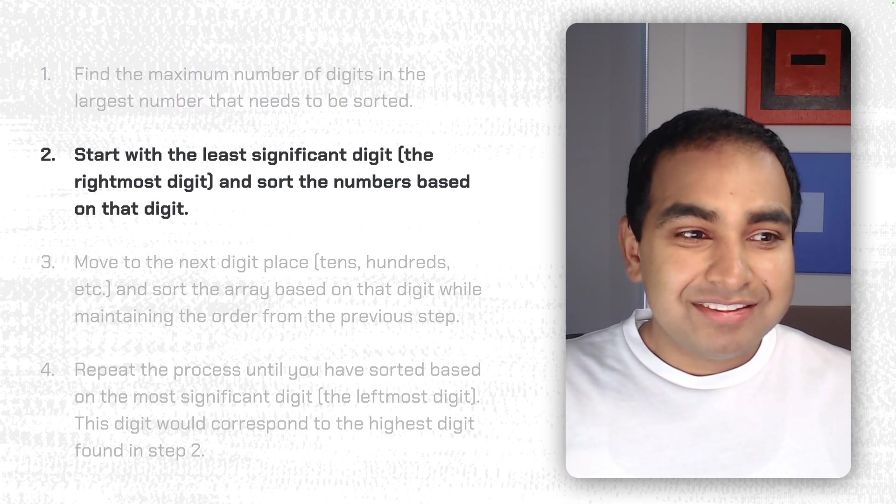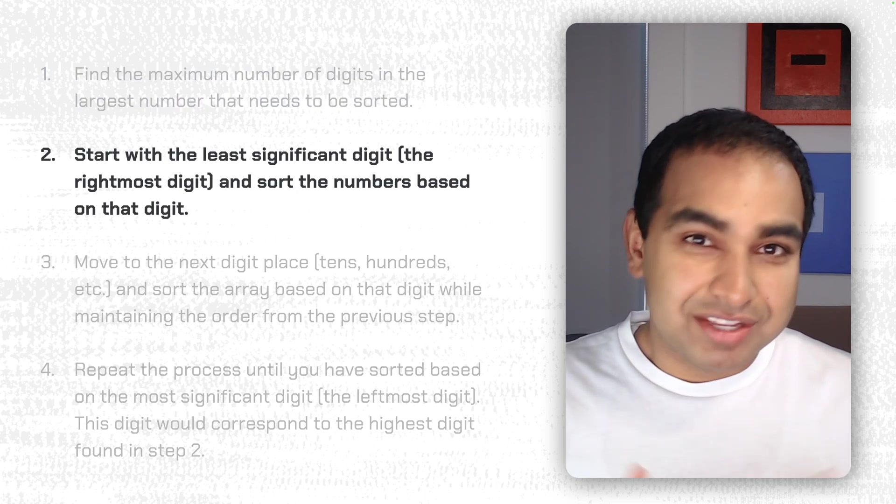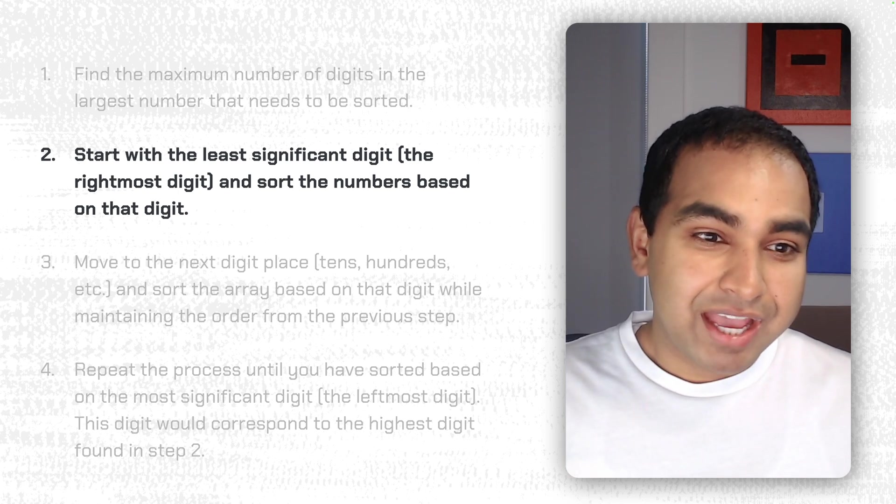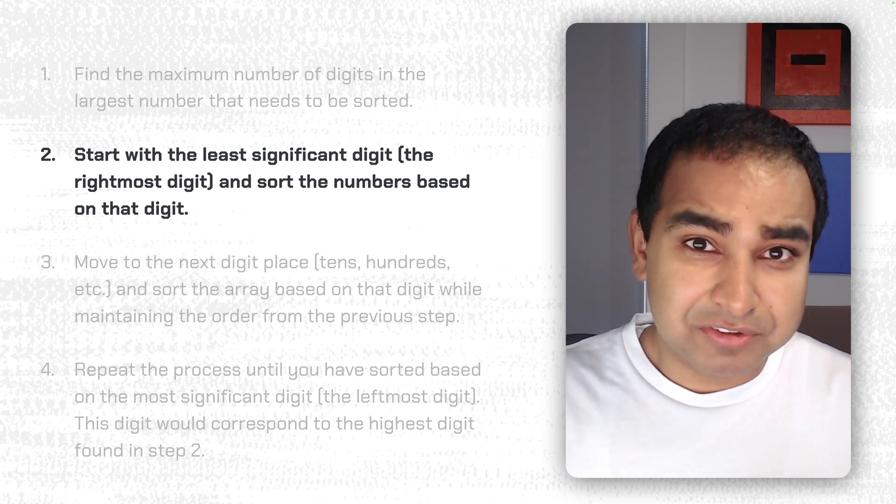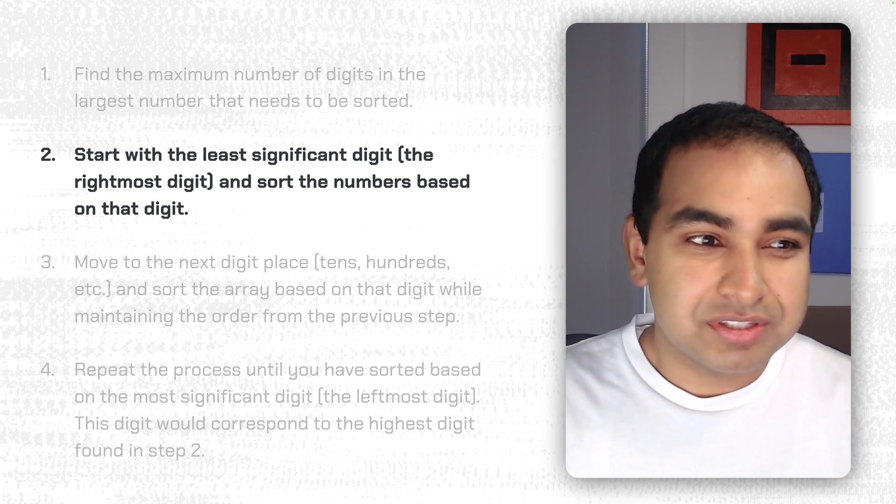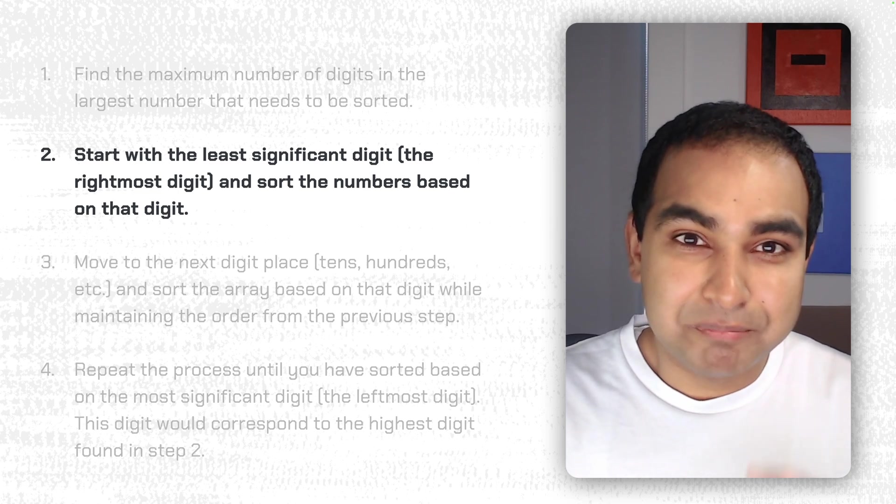Next step, we start with the least significant digit, the rightmost digit, which in our case would be the 1s digit, and sort the numbers based on that particular digit. Now, this may sound a little bit confusing, but as we walk through the example, all of these words will be much clearer.